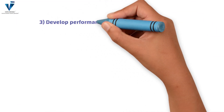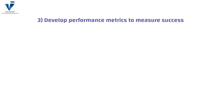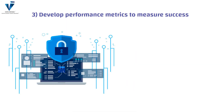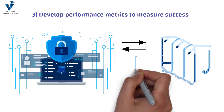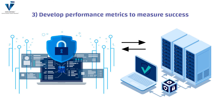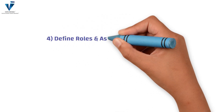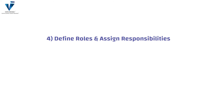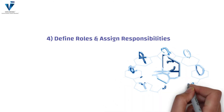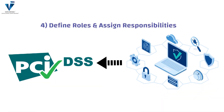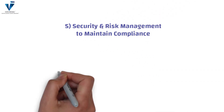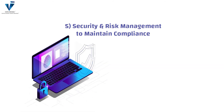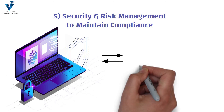The next best practice is to develop performance metrics to ensure success. Organizations should be able to quantify their ability to sustain security practices and PCI DSS compliance by developing a set of metrics that summarizes the performance of implemented security controls and compliance programs. Organizations must also define and assign responsibilities, as establishing and assigning roles ensures accountability and further ensures compliance with PCI DSS standards.